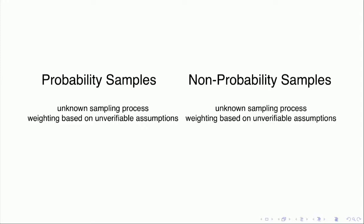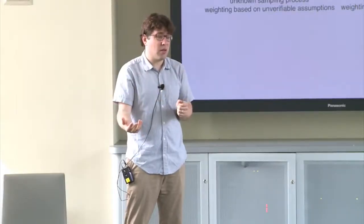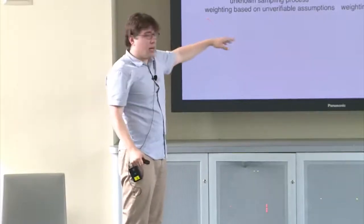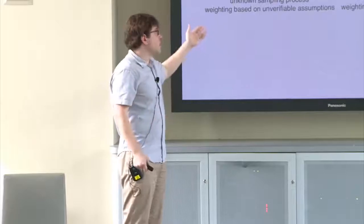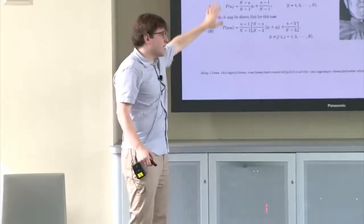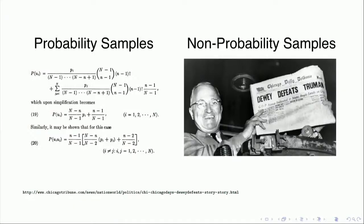I think this bright-line view is no longer a good reflection of the way the world is. Now, probability samples have an unknown sampling process because of high rates of non-response. If you think of non-response as part of the sampling process, there's a part you control — who you sample — and then respondents themselves control whether they participate. We deal with this through weighting techniques that require certain assumptions about the response process, which we don't observe or control.